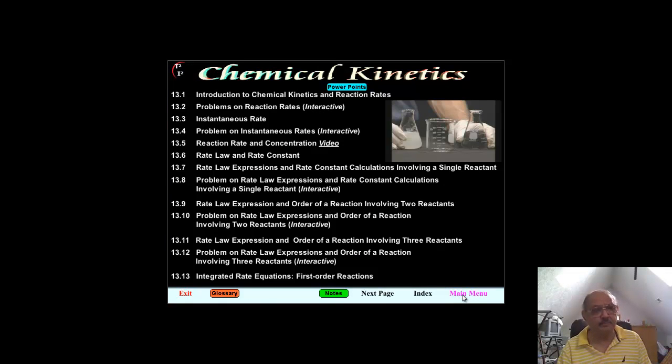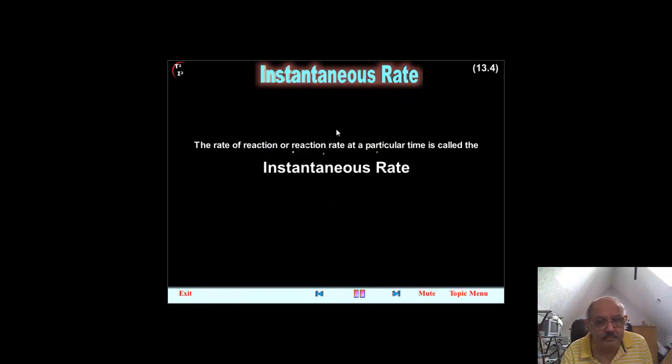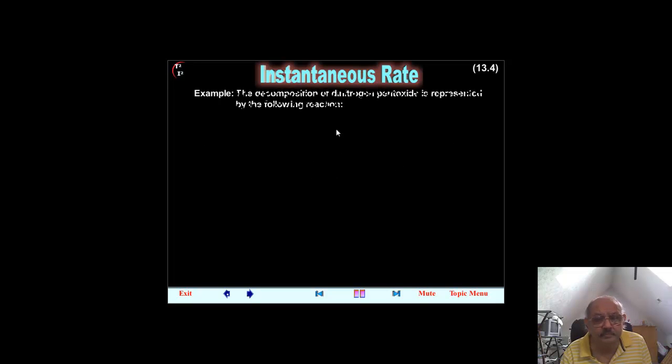Going back to topic menu. Wherever we have written the word interactive, we have included interactivity. And here is how we have done the interactivity to give you an example in instantaneous rates. The rate of reaction or reaction rate at a particular time is called the instantaneous rate. Example, the decomposition of dinitrogen pentoxide is represented by the following reaction.